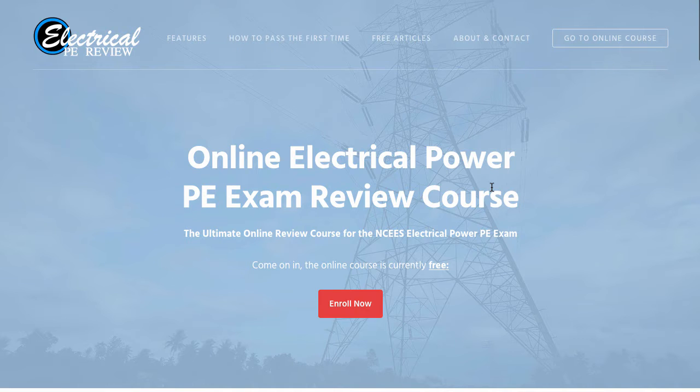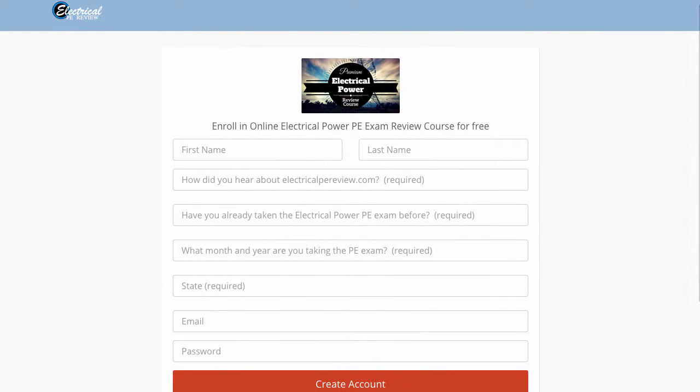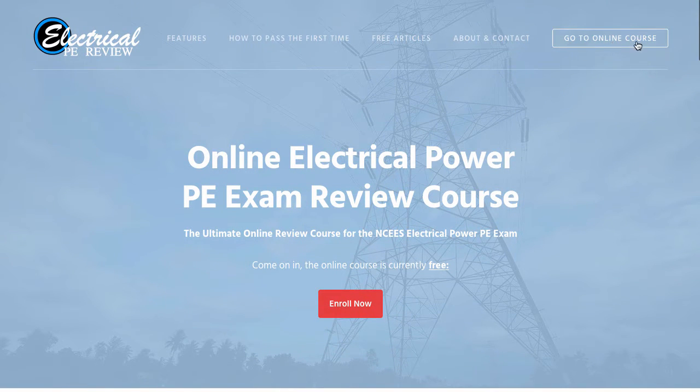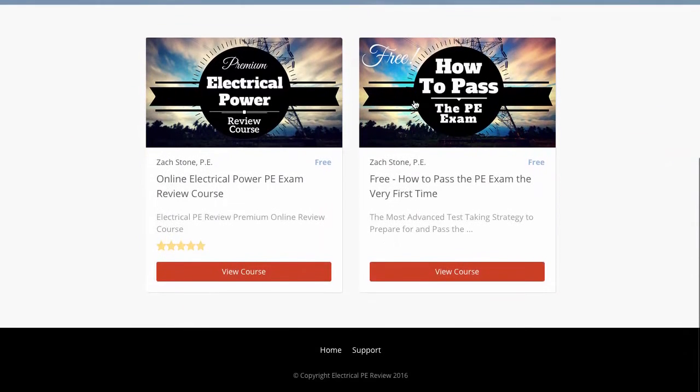So here we have our front page. The easiest way right on the front page is just to click on the enroll now and that will bring you right to our registration access. Another way to get to it is from the front page. If you go to online course at the top right of our menu bar and click there,